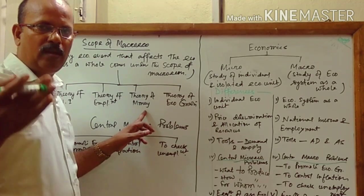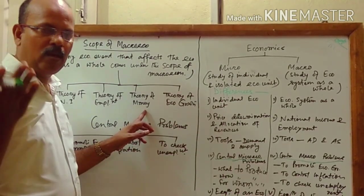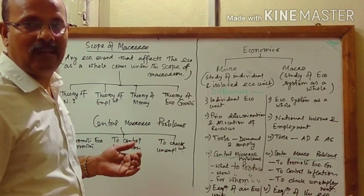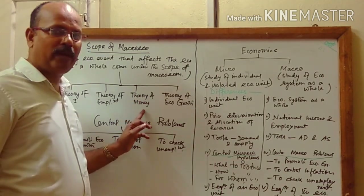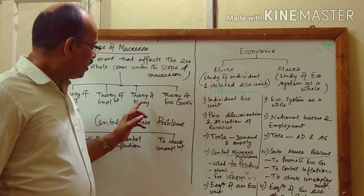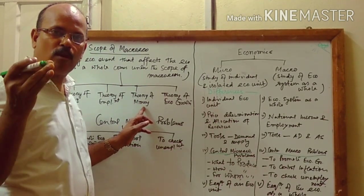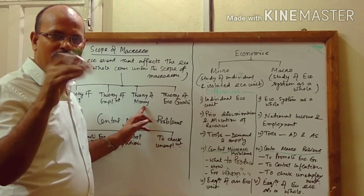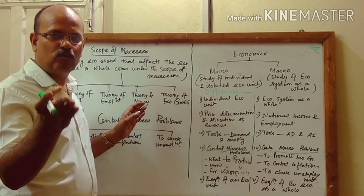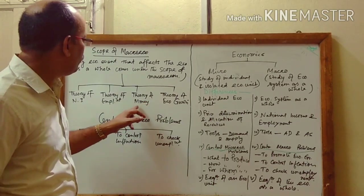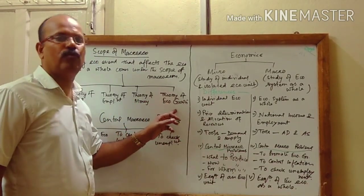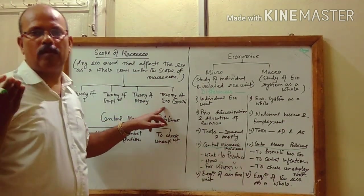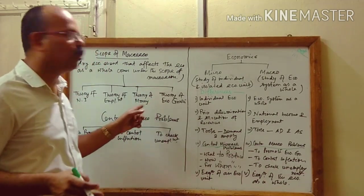Third is the theory of money. Money is said to be sweeter than honey because using money you can purchase honey as well as all other things. The theory of money includes how much should be the supply of money in the economy, and monetary policies — how to regulate the supply of money and credit supply in the economy. Fourth is the theory of economic growth — how to promote economic growth, how to produce more goods and services. All these come under the scope of macroeconomics.